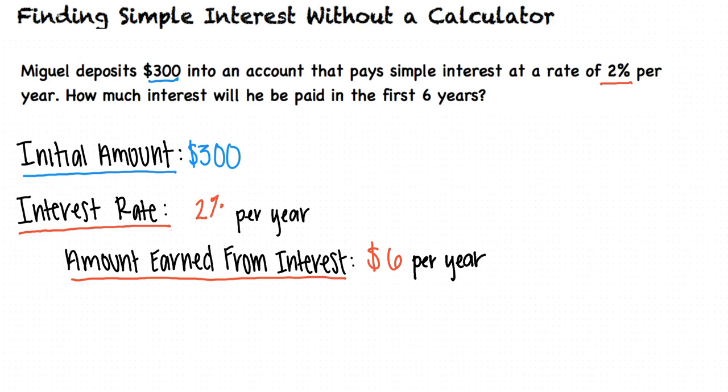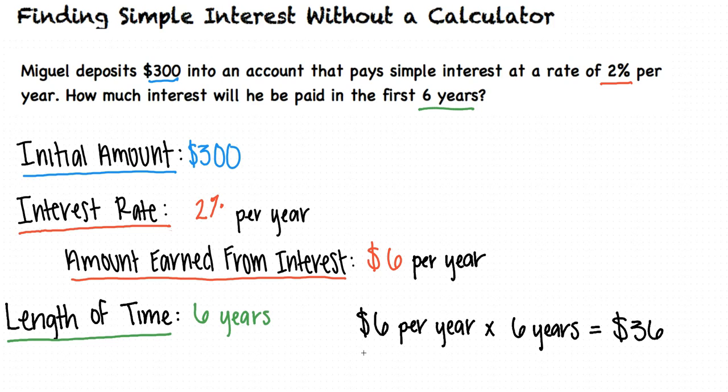But we're not done yet. The problem asks us how much interest Miguel will be paid in the first 6 years. We've only calculated how much interest Miguel earns in 1 year, so we must multiply that value by 6 to determine the amount of money he will be paid in 6 years. 6 dollars per year times 6 years gives us an answer of 36 dollars.